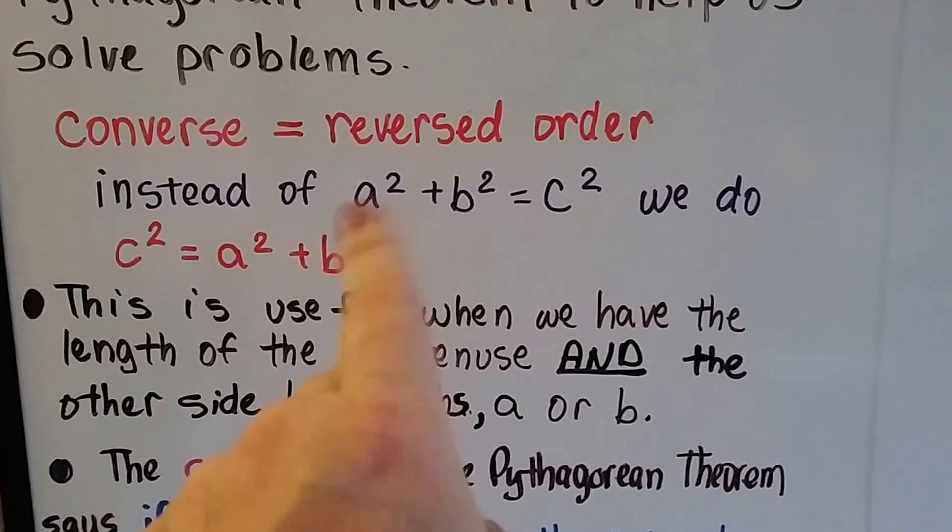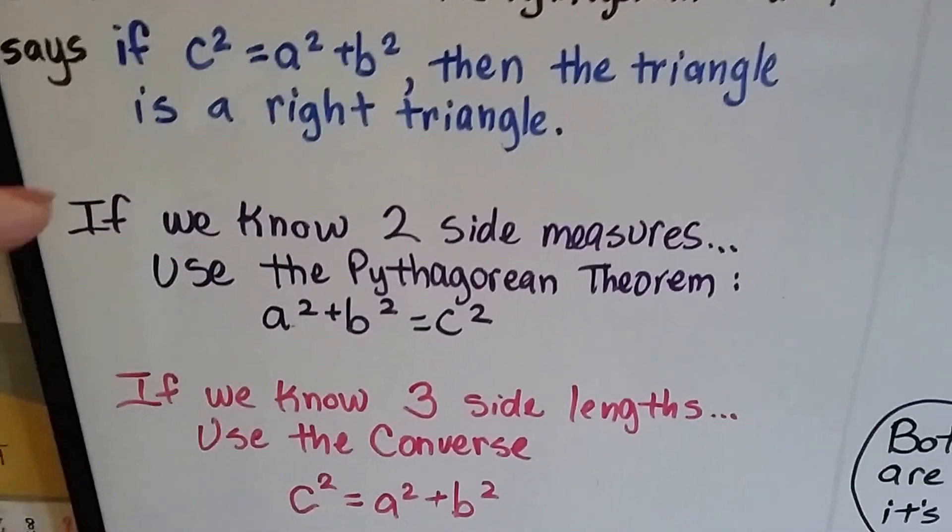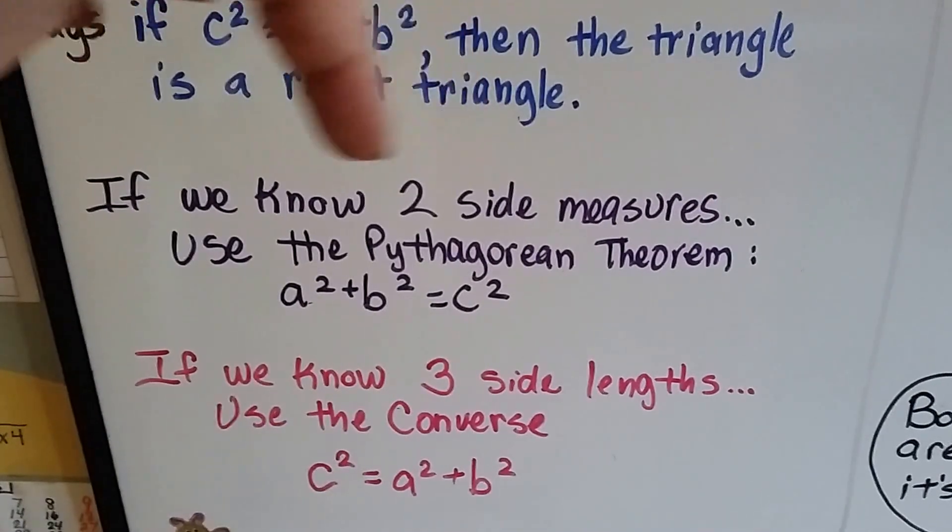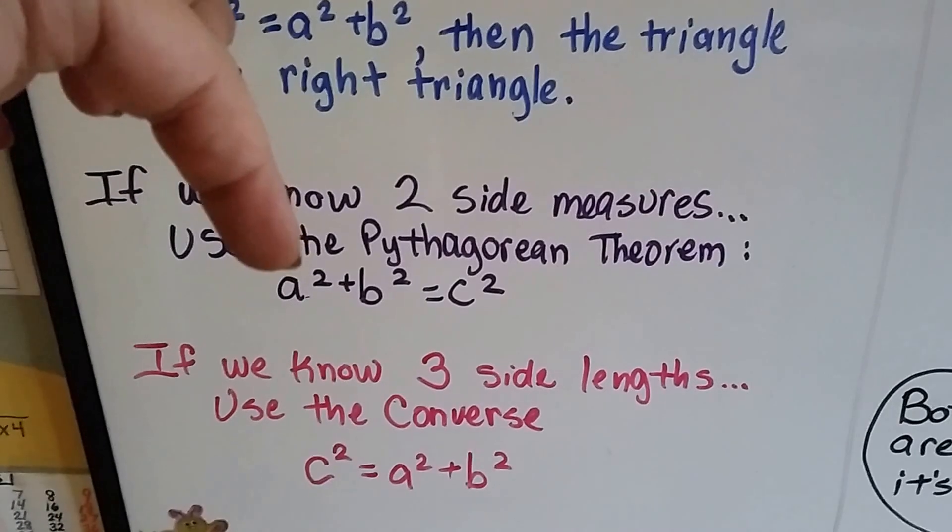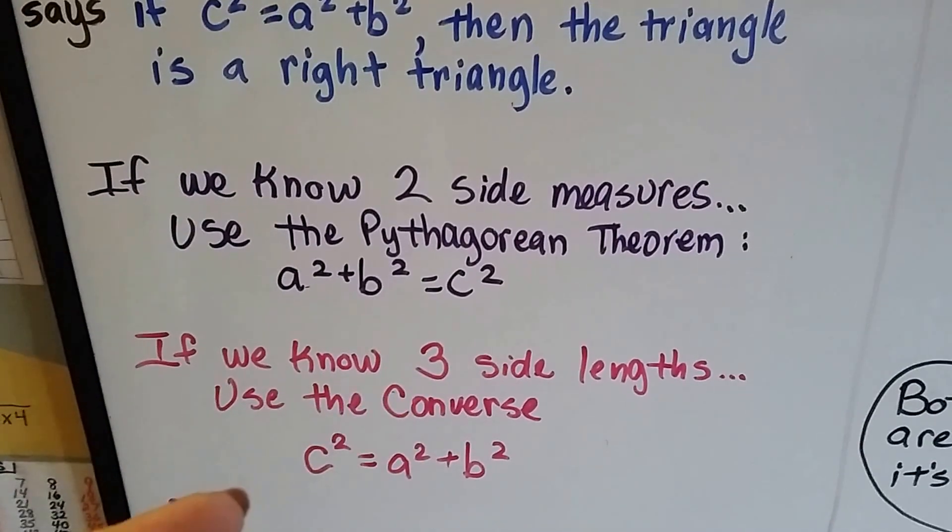Just like if we did it the other way around, we would know it's a right triangle. Now, this is what you need to remember. If we know two side measures, then we use the Pythagorean theorem, a squared plus b squared.